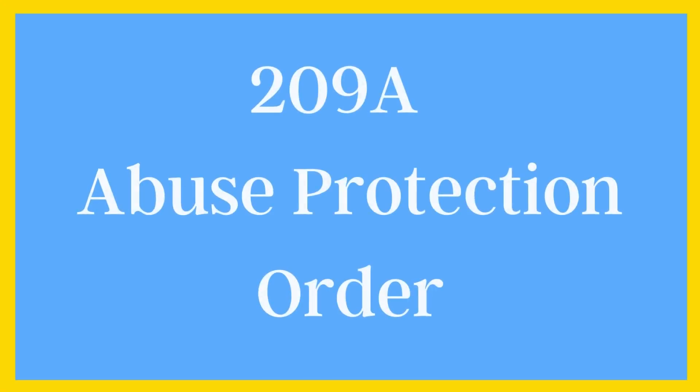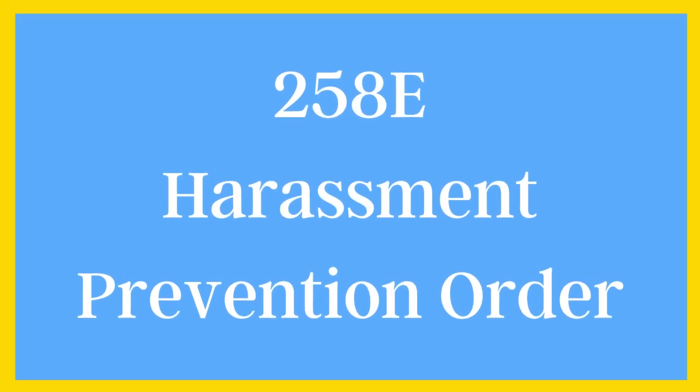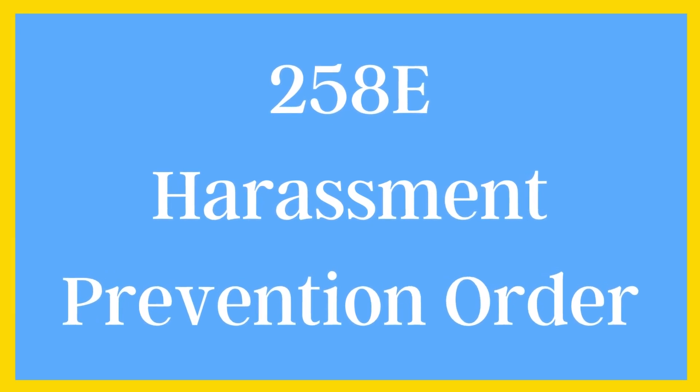The key difference between these two orders lies in the relationship between the parties and the type of protection each order offers. The 209A Abuse Protection Order is specifically designed to address domestic or family-related abuse, requiring a specific relationship between you and your abuser. The 258E Harassment Prevention Order can apply to a wider range of situations, including problems with your neighbors, acquaintances, or even strangers, as it focuses on the behavior of harassment, not the relationship.